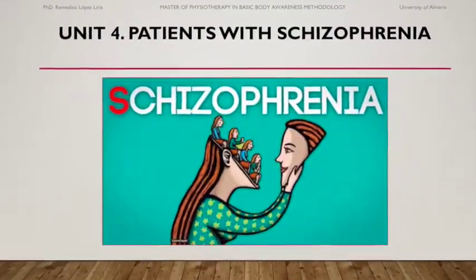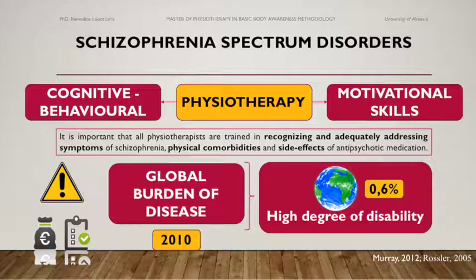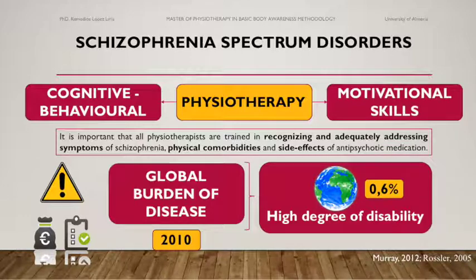Unit 4: Patients with Schizophrenia. It is important that all physiotherapists are trained in recognizing and adequately addressing symptoms of schizophrenia, physical comorbidities, and side effects of antipsychotic medication. Policymakers should therefore offer means to physiotherapists to acquire the necessary cognitive, behavioral, and motivational skills. It is unequivocal that the role of physiotherapists in the multidisciplinary treatment should be further promoted.